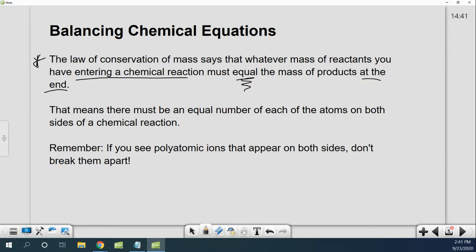Now what this means is there is an equal number of each of the atoms on both sides of a chemical reaction. So if I have five nitrogens on one side of a chemical reaction, then I would need that exact same number of nitrogens on the reactant side. I just need the same number of atoms on each side.